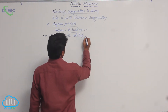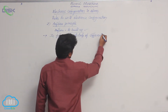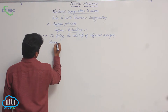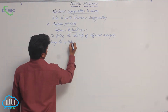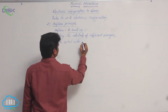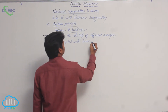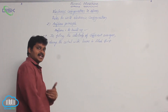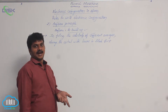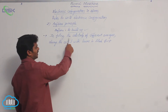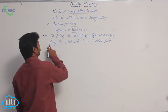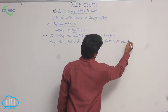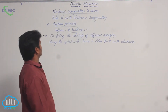In filling the atomic orbitals of different energies, always the orbital with the lower energy is filled first with electrons, and then the orbital with higher energy is filled with electrons. That is the statement of the Aufbau principle.